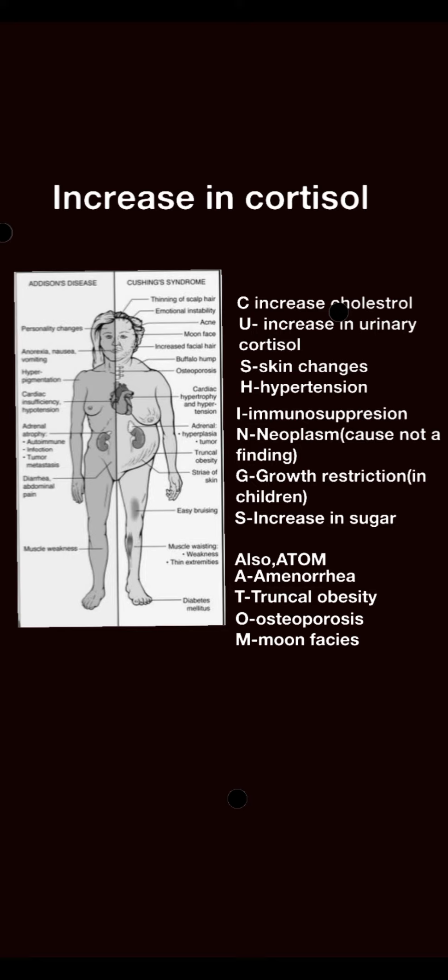There are some more features to remember in Cushing syndrome, and these can be remembered by the mnemonic ATOM. A is for amenorrhea. Amenorrhea is due to the fact that cortisol inhibits gonadotropin-releasing hormone, causing disruption of ovarian and testicular functions. Amenorrhea and hirsutism are both due to this mechanism.